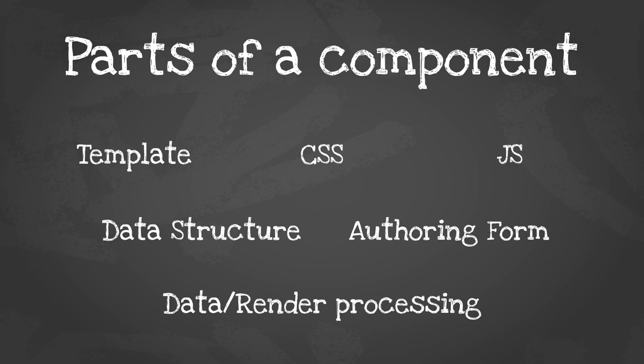A component also has an authoring form because it needs to be placed on the page somehow. And then there's render and data processing — very rarely do you take exactly what you author and place it directly onto the page. There's usually an amount of preprocessing and manipulation to get to what you really want to display or what is friendly for front-end developers in the template. Those are the key essential parts of a component.